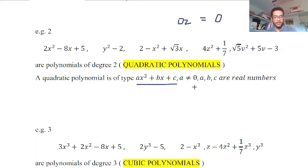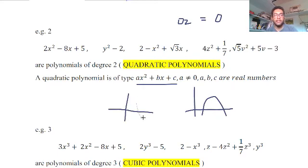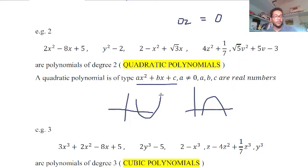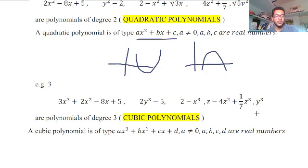When quadratic polynomials are drawn graphically, they usually form a shape called a parabola — it may open upward or downward.